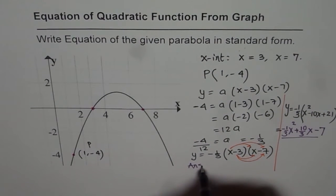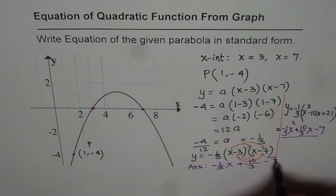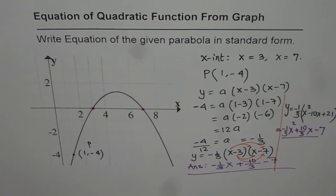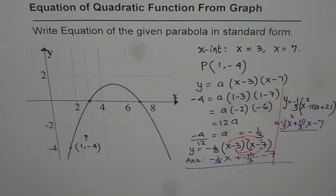So our answer is -1/3x² + 10/3x - 7. I'd like you to do this question on your own and then check with my answer. I hope you understand the steps involved in it. Thank you and all the best.